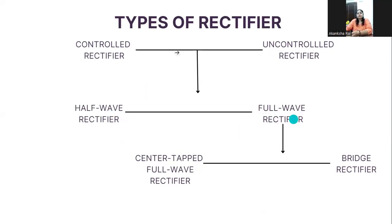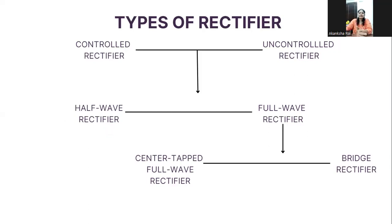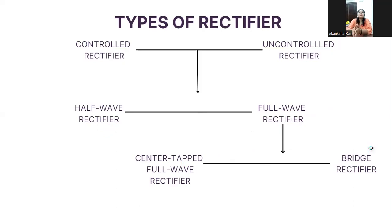There are two types of rectifiers: half wave rectifier and full wave rectifier. In both controlled and uncontrolled categories, the classification is half wave rectifier and full wave rectifier. In this video today we will understand the working of half wave rectifier in full detail — how exactly it is designed and how it works. In the next video we will focus on full wave rectifier, covering both center-tap full wave rectifier and bridge rectifier.